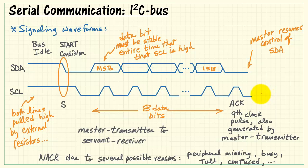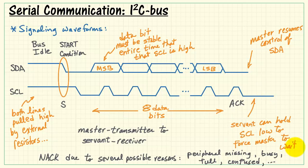Now at this point, the master resumes control of the serial data line. At this point, the servant actually has the option to hold the serial clock line low to force the master to wait if needed.